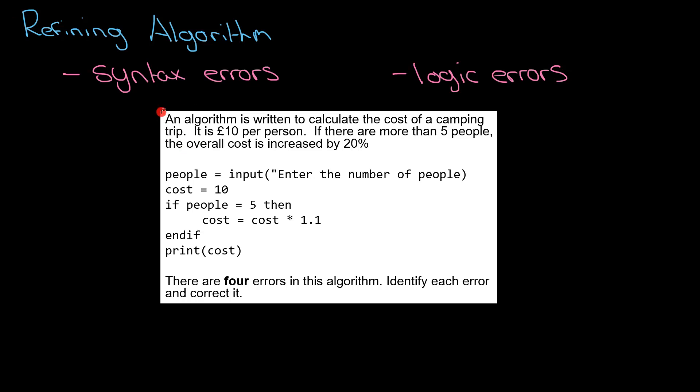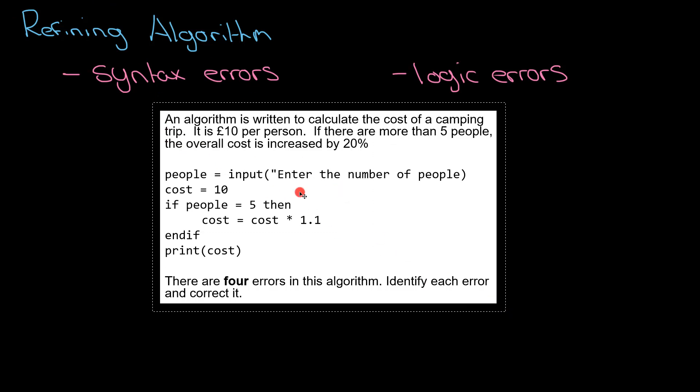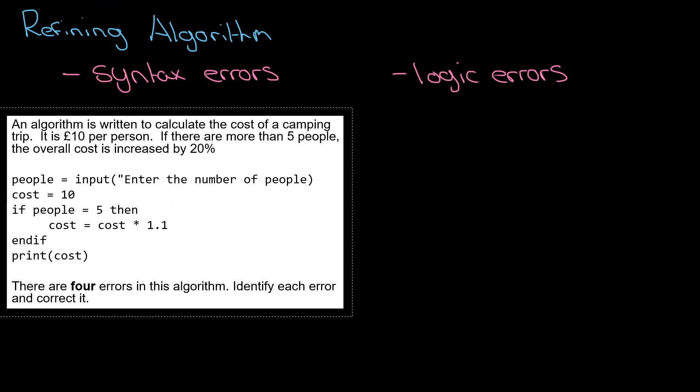What we're going to do is show you an example algorithm. Here's one. What's really important for us to do is really read what the algorithm is meant to do first. If we don't do that, then we're not sure what the algorithm is meant to do and we can't fix the code. An algorithm is written to calculate the cost of a camping trip. It is ten pounds per person. If there are more than five people, the overall cost is increased by 20 percent.